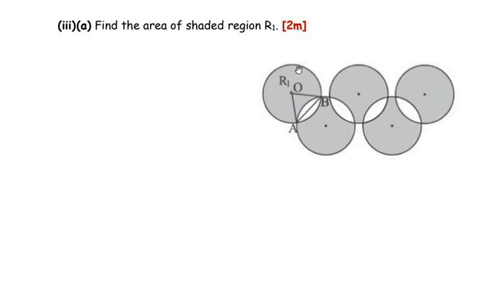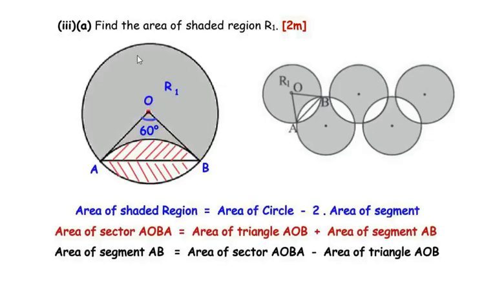Find the area of shaded region R1. R1 is the shaded region of one circle. To find the area of the shaded region R1, we consider the area of the entire circle and subtract the area of the two segments. So: Area of shaded region R1 = Area of the entire circle − 2 × Area of segment. We can find the area of the circle using the formula πr², since radius = 7.